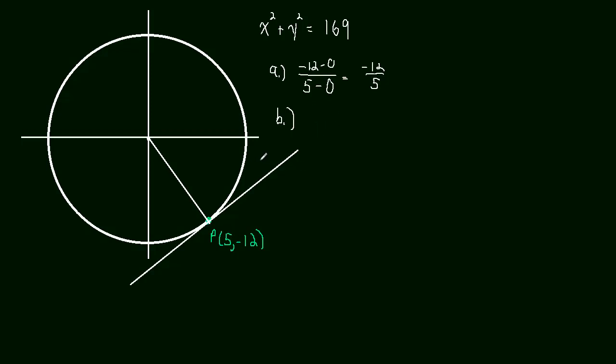Okay, so let me get rid of that stuff for a second. So part B, the slope of the tangent line is 5 over 12.